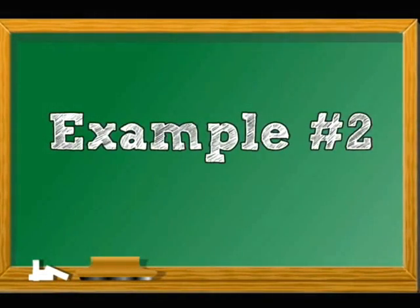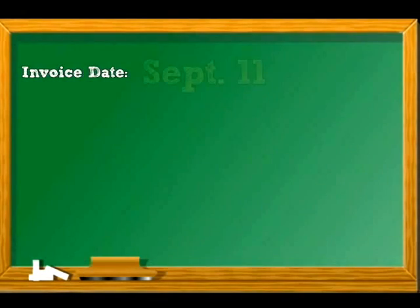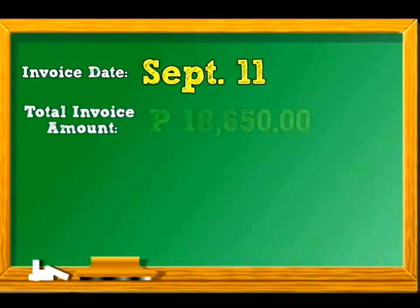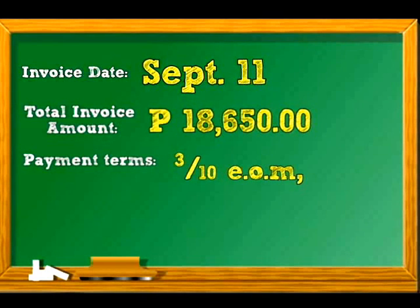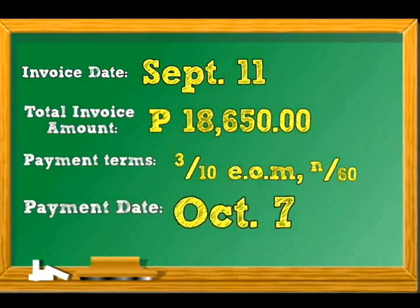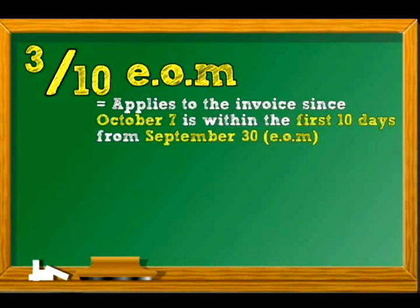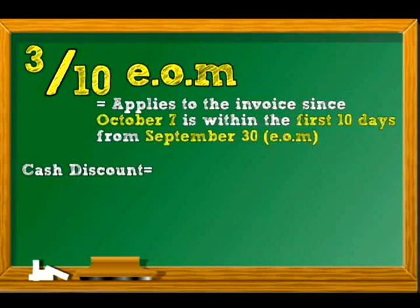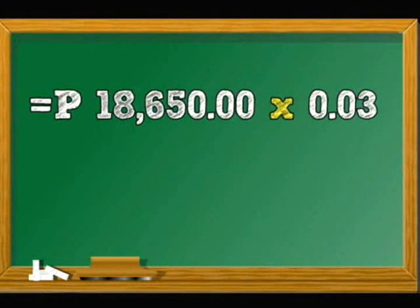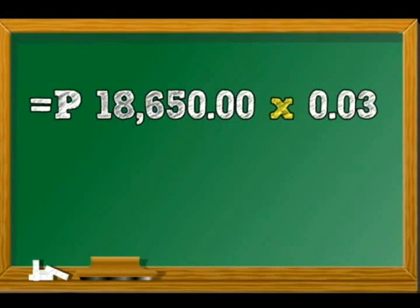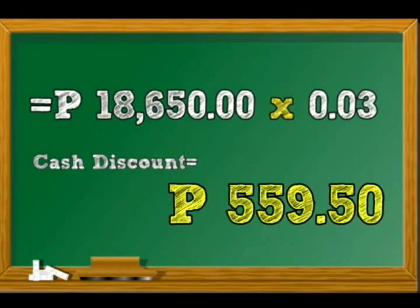Another example: the invoice date is September 11. The total invoice amount is P18,650. The payment terms are 3/10 EOM and net 60. The payment date is on October 7. The 3/10 EOM applies to the invoice since October 7 is within the first 10 days from September 30. Therefore, cash discount is equal to total amount of invoice multiplied by cash discount rate: P18,650 multiplied by 0.03, giving us P559.50.